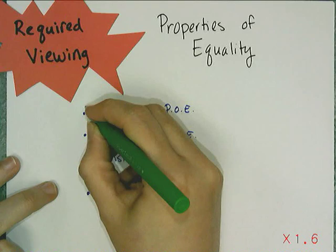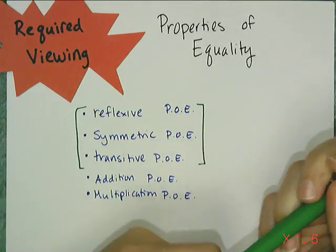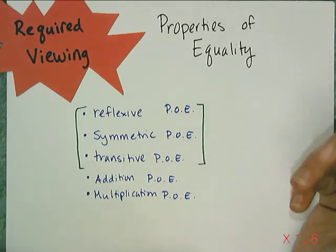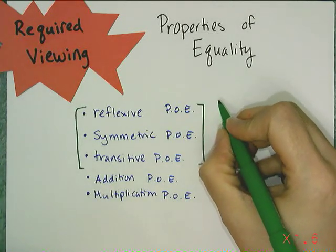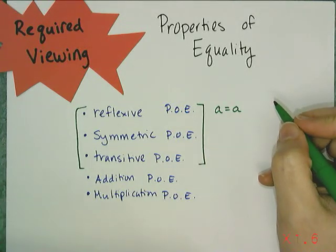So the first three here, reflexive, symmetric, and transitive, really aren't used for solving equations. These are more used for things like proof and algebra two. The reflexive says very simply that A equals A, and we don't use that when we solve equations.